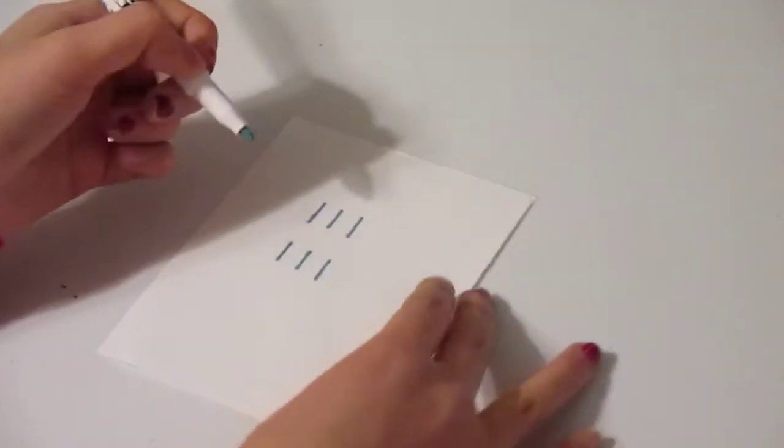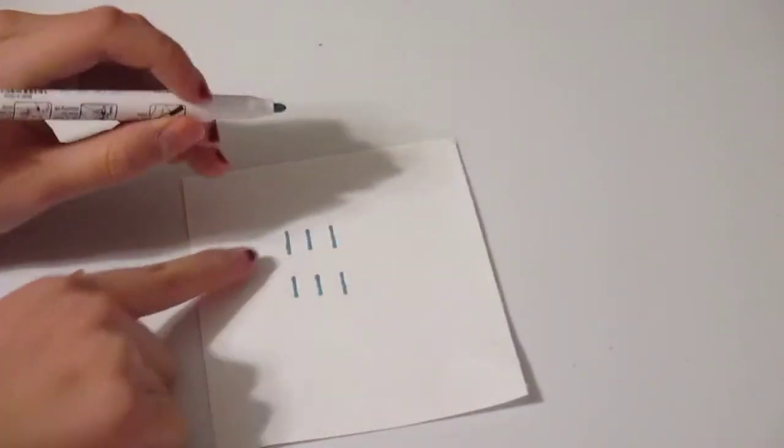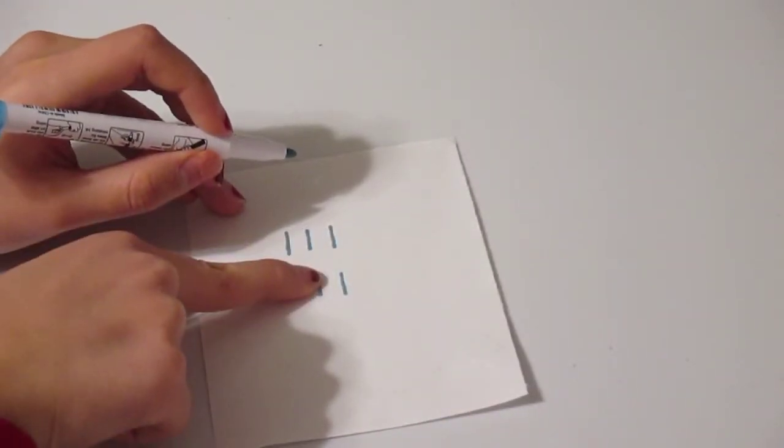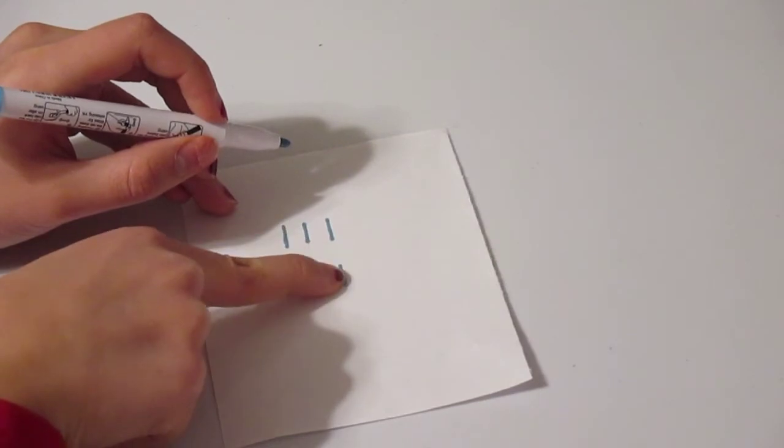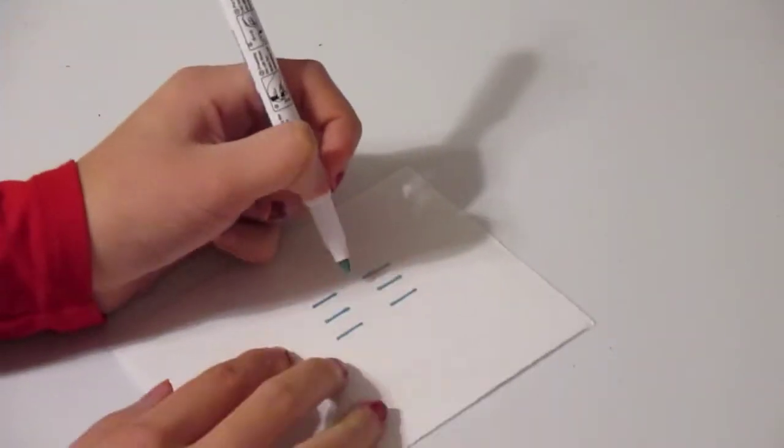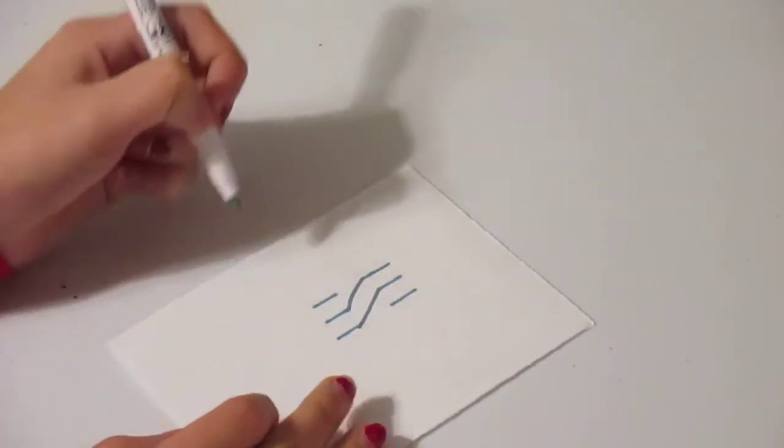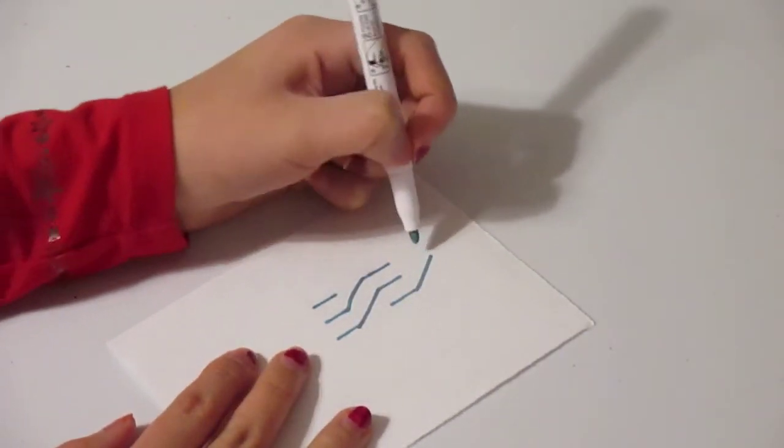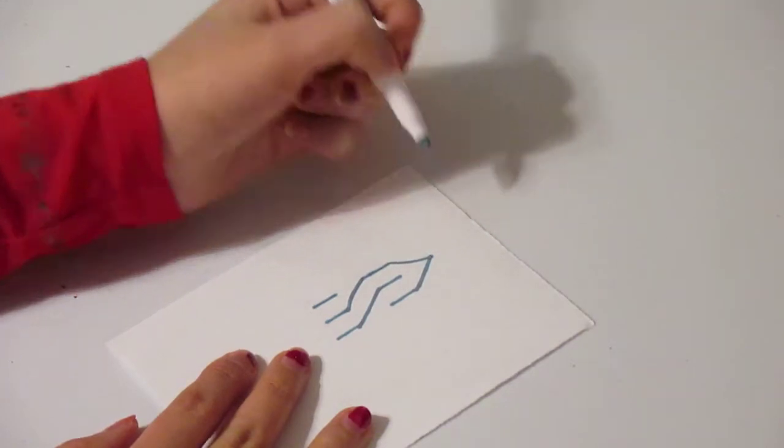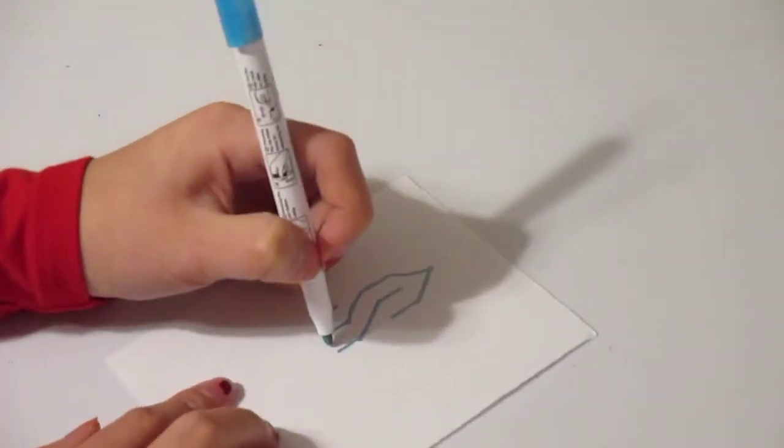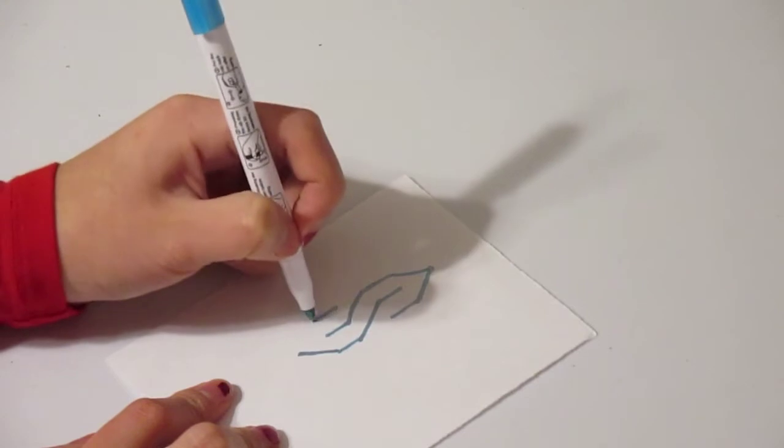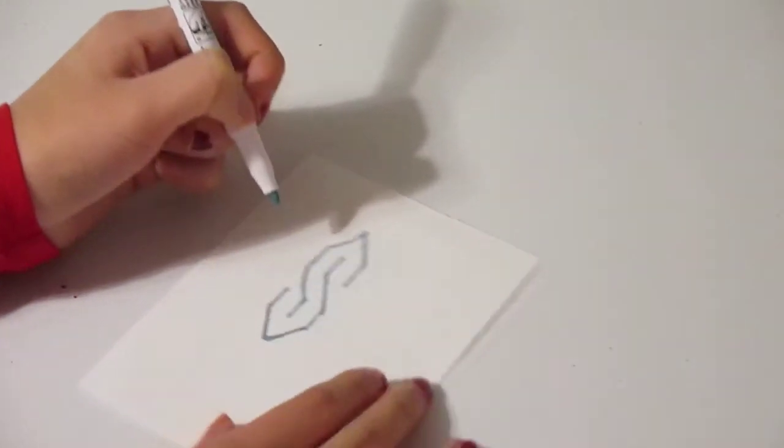Now you're going to connect this top line to this middle line and this middle line to this bottom line. Just like that. And now you're going to draw like you would draw a roof of a house. Do that. Same on the bottom.